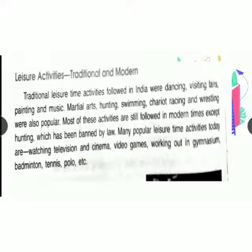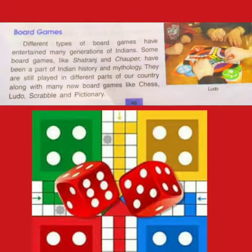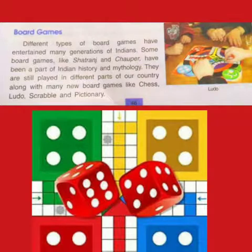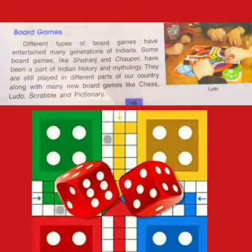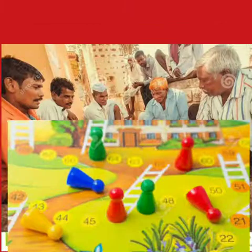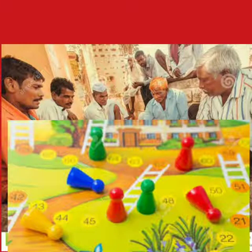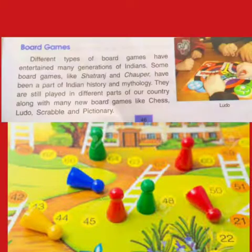Leisure Time activities: Traditional and Modern. Traditional Leisure Time activities followed in India were dancing, visiting fairs, painting and music, martial arts, hunting, swimming, chariot racing, and wrestling. Most of these activities are still followed in modern times, except hunting, which has been banned by law.